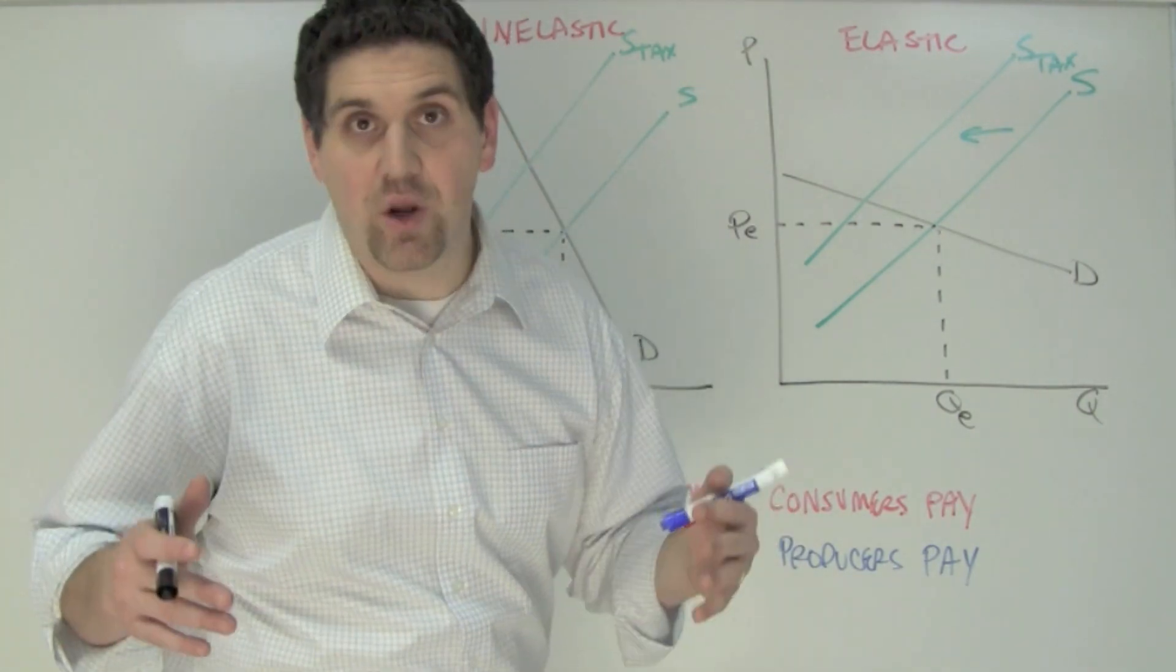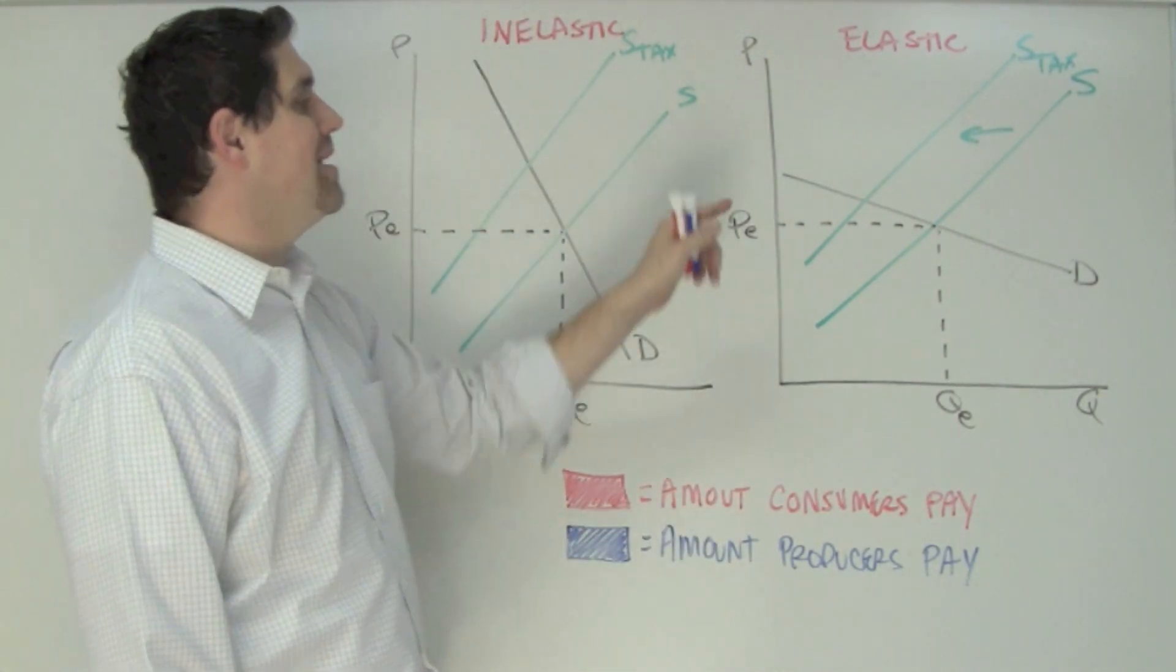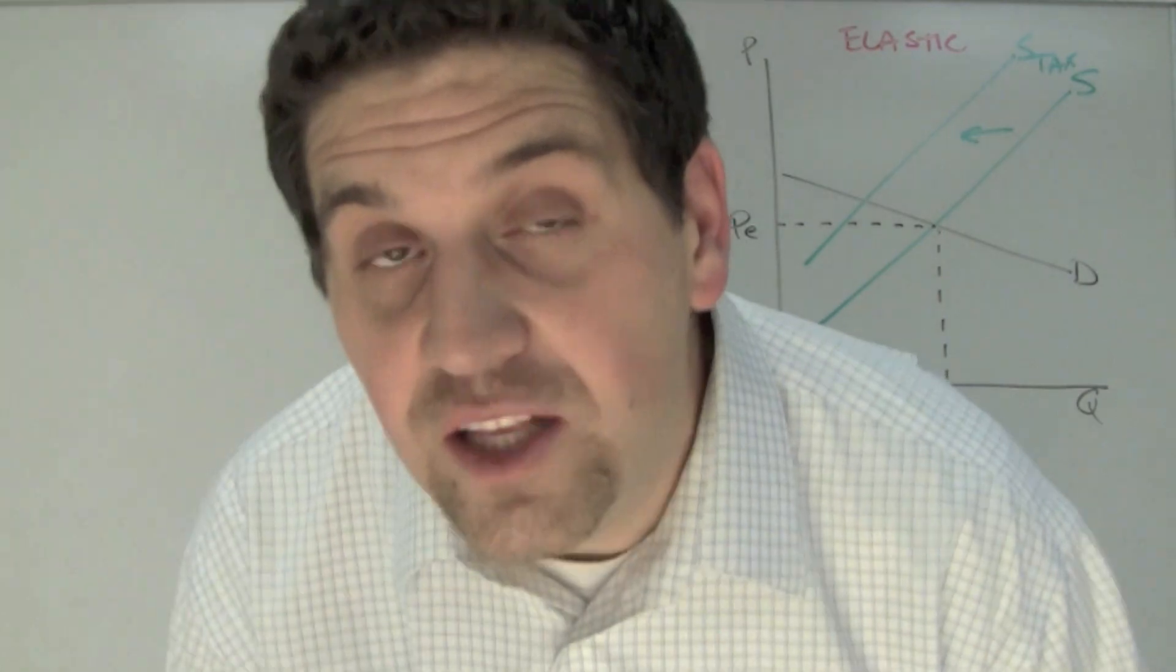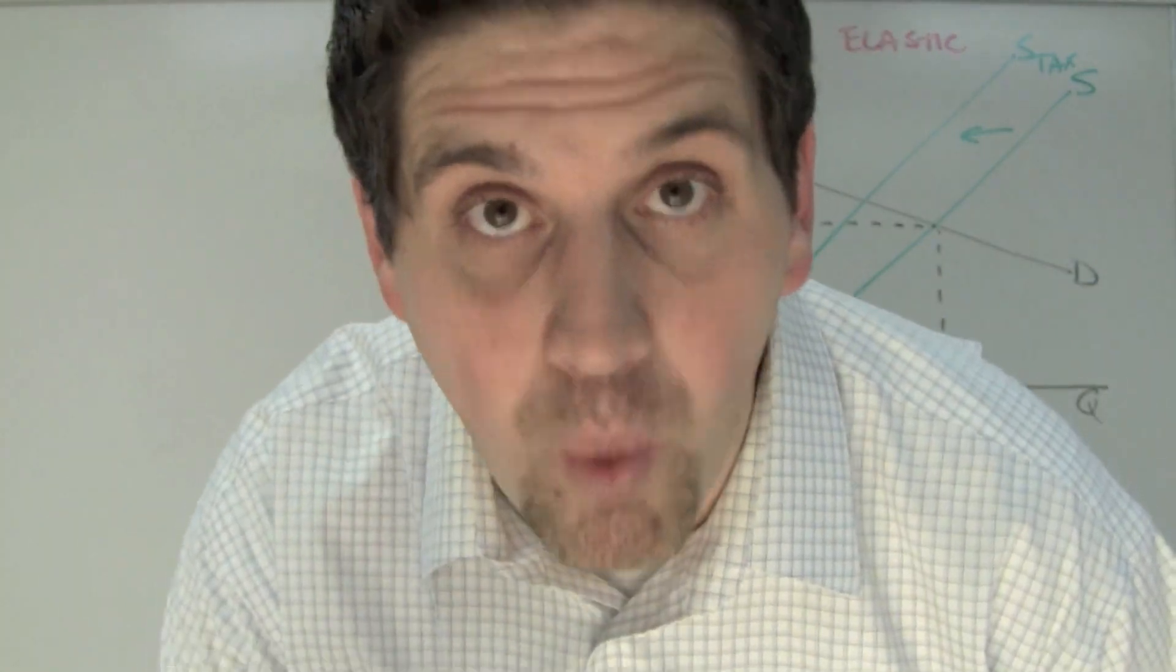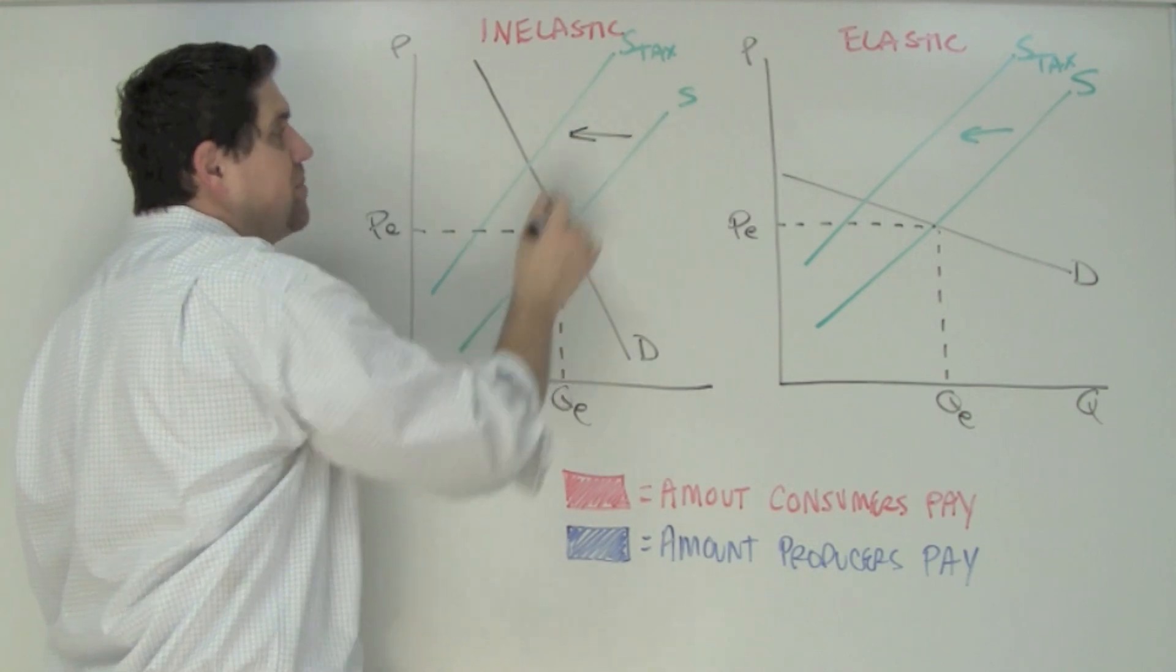Before we answer this particular question, let's take a look at what a tax looks like when the demand is inelastic and when the demand is relatively elastic. These graphs are going to help us figure out who pays more of this tax. When the demand is relatively inelastic and the supply curve shifts because of the tax...